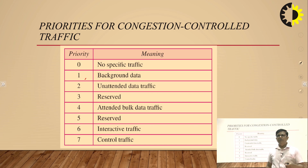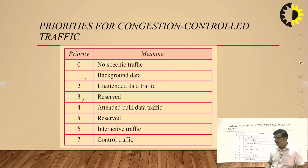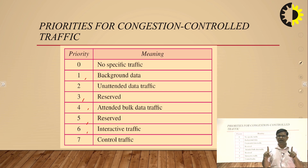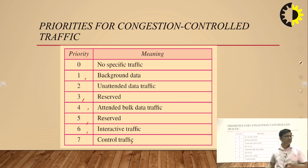Priority 2 is unattended data traffic — packets freely moving on the network that can be unattended. Priority 3 is reserved. Priority 4 is for attended bulk data traffic. Priority 5 is reserved again. Priority 6 is for interactive traffic, where both source and destination can communicate with each other — both nodes work as source and destination, meaning two-way communication. Priority 7 is for control traffic to allow data to move freely to the destination.